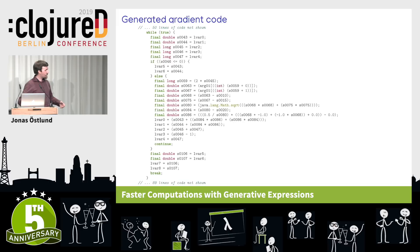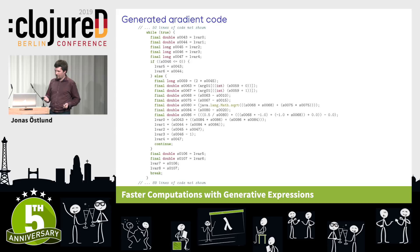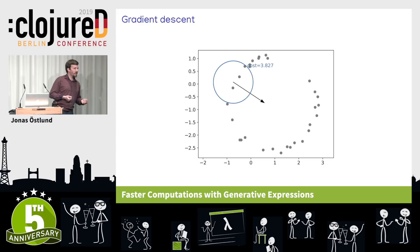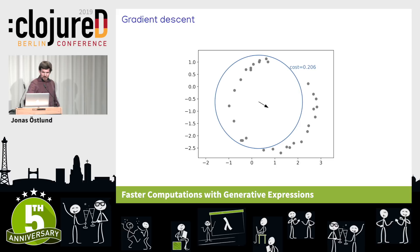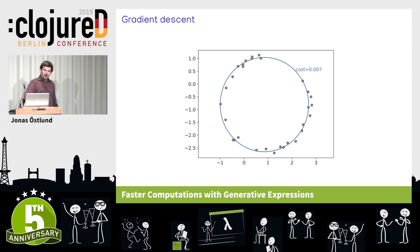Now that we have our gradient, we can implement gradient descent. We start with a guess of the circle parameters, update the guess by taking a step in the opposite direction of the gradient, and we see the circle converge to the points. We now have the full algorithm for computing the parameters of a circle given some 2D sampled points.